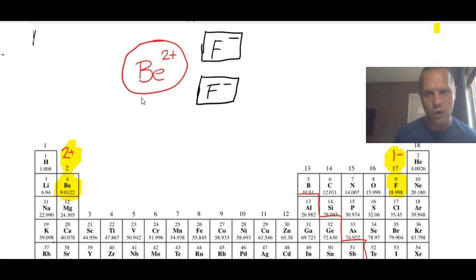What's the overall charge of this compound? If you have one beryllium, that gives you a two-plus charge. But if I have two fluorides, each gaining one electron, that's a negative one charge on each fluoride, which is two negative. Overall, this ionic compound is neutral. It has no charge.